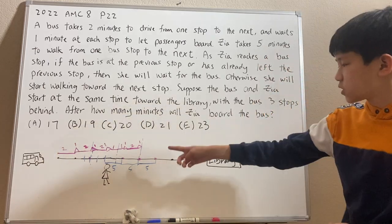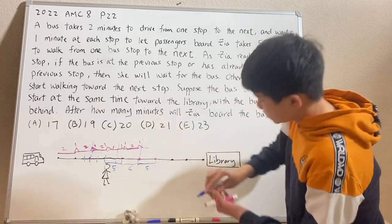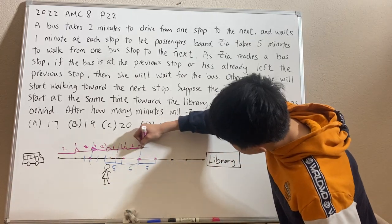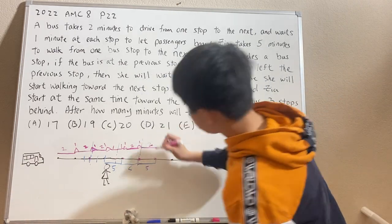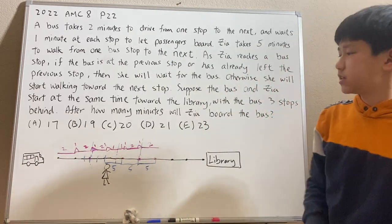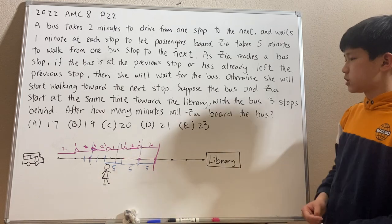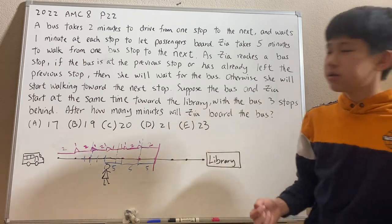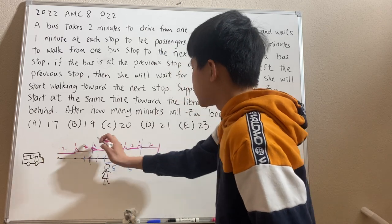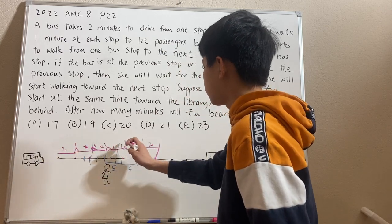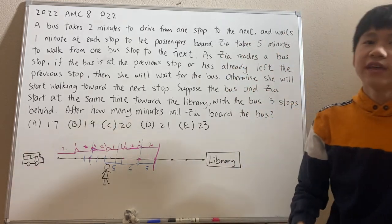So Zia is going to wait at the station while the bus travels. The bus spends another two minutes until it reaches the stop and they meet — Zia boards the bus. So in total, how many minutes is this? Counting up: 15 minutes from the three five-minute intervals, plus two more minutes for the bus to arrive, gives us 17 minutes.